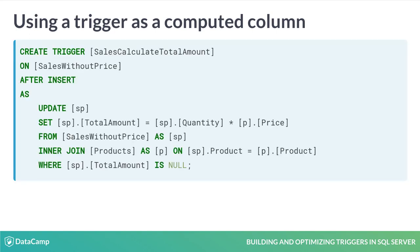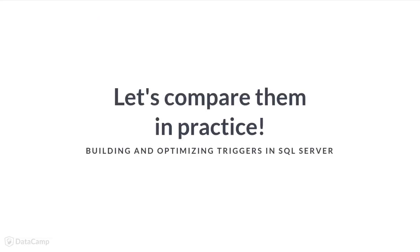Here, the Price column is not part of the SalesWithoutPrice table. The trigger determines the TotalAmount by using the Price column from another table — Products in this example. Now that you've seen how triggers can substitute for other database objects, let's see how to use them in practice.